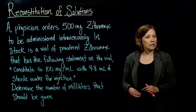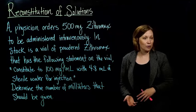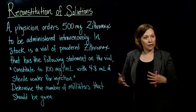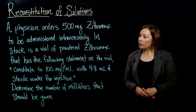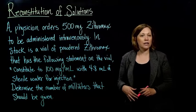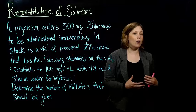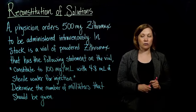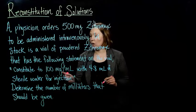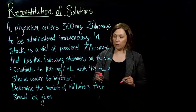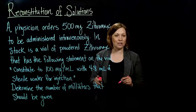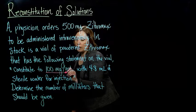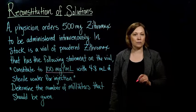This problem isn't a whole lot different than all the other dosage calculation problems we've been doing. We can use dimensional analysis again. What we have to figure out is our conversion factor — what is in the on-hand medication that we have available? Once it's reconstituted with 4.8 milliliters of sterile water for injection, it will be at a strength of 100 milligrams per milliliter.